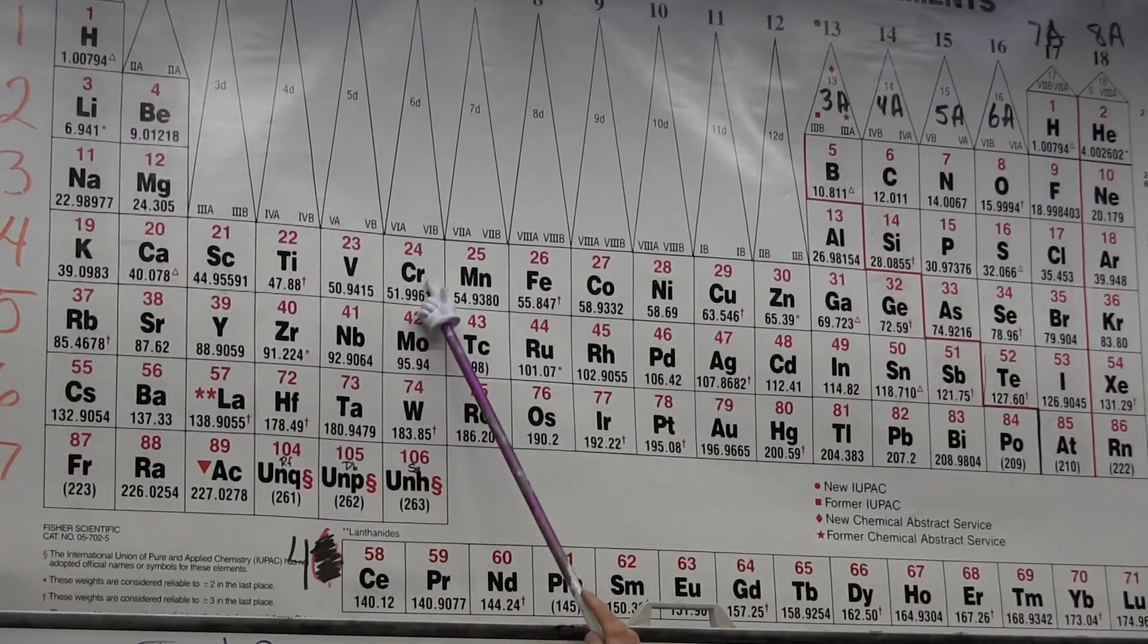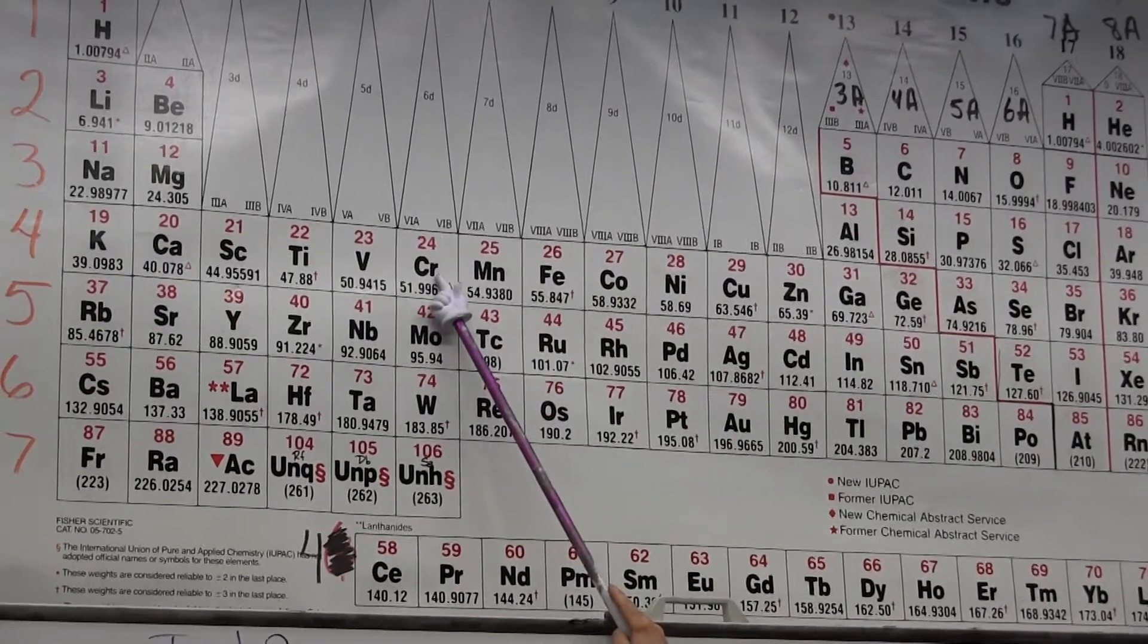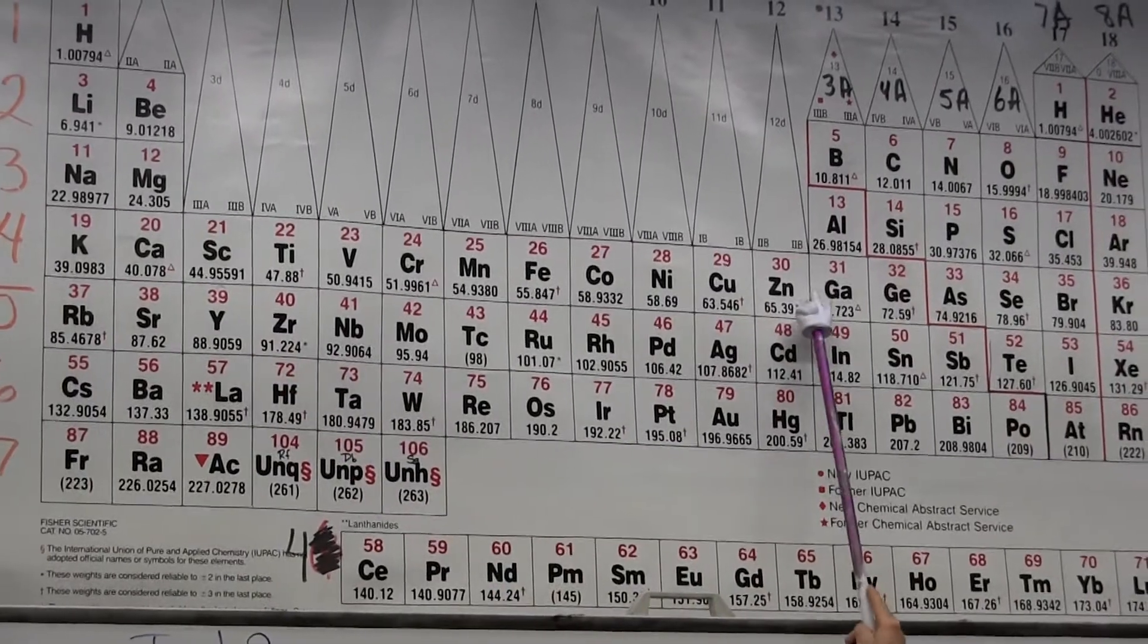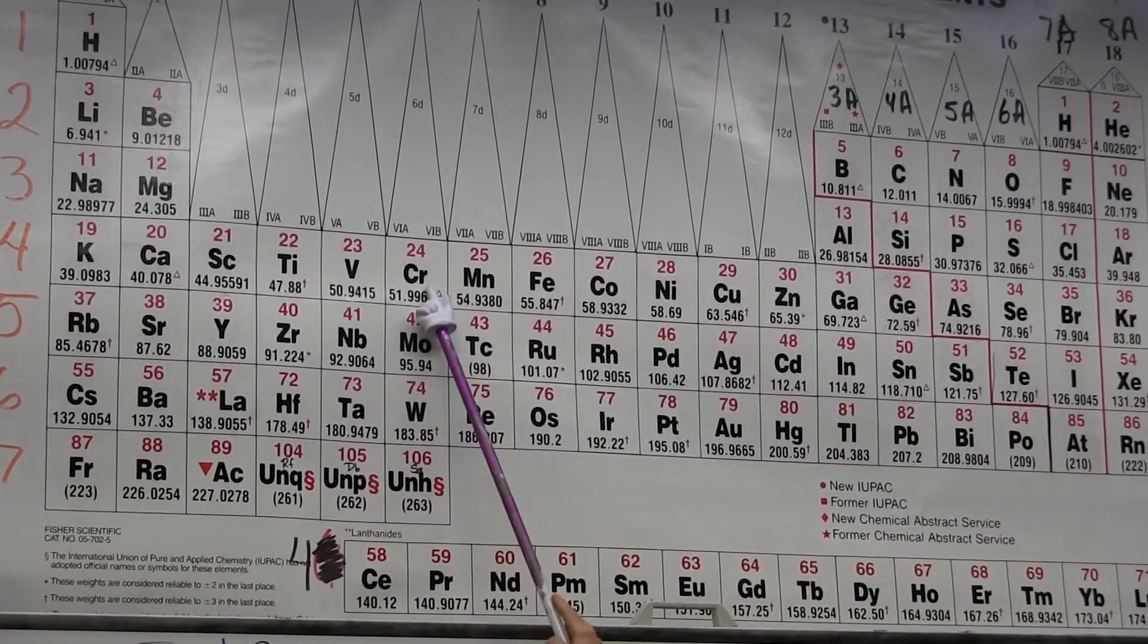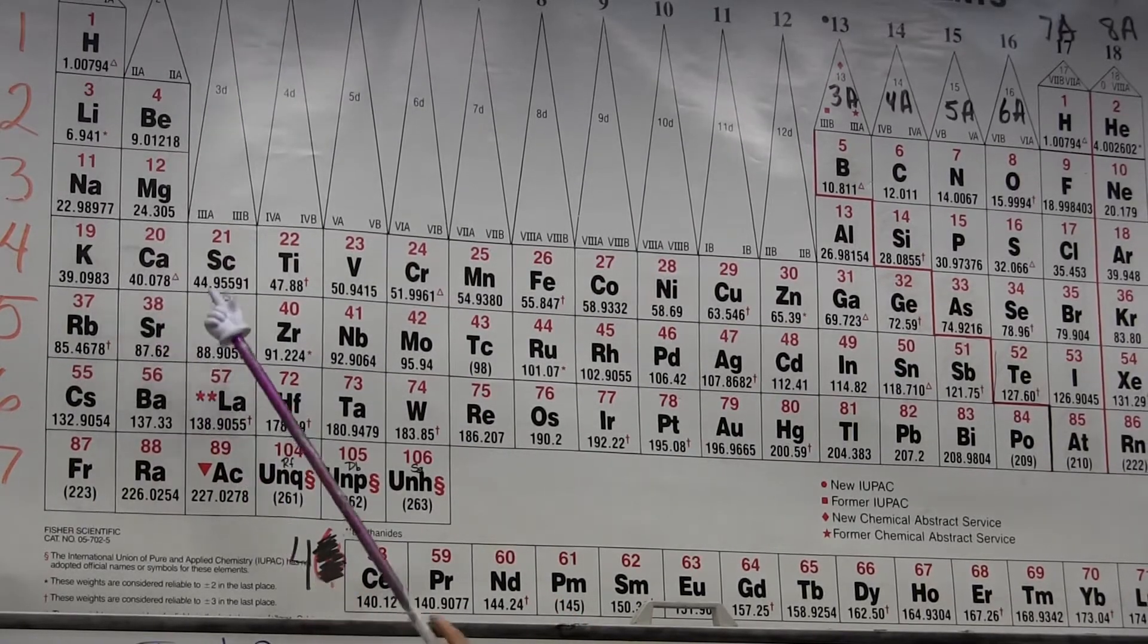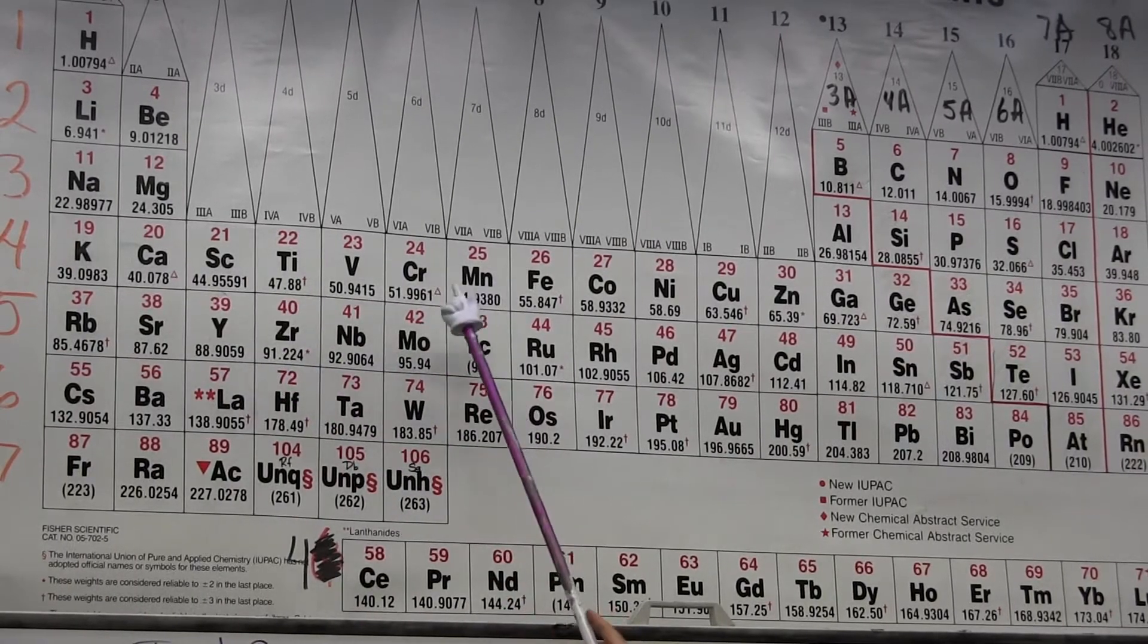As I'm filling these d electrons—scandium, titanium, 3d1, 3d2, 3d3—when I get to chromium at 3d4, that's one electron short of a half-filled subshell because there are ten electrons required in the d subshell. It turns out to be more stable to take one of the s electrons and place it into a d orbital to give a half-filled subshell with zero orbital angular momentum.